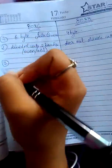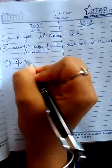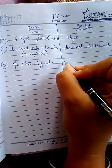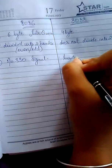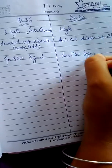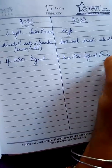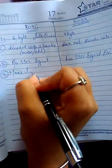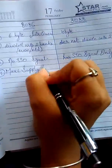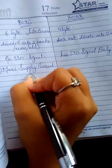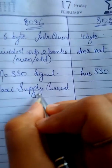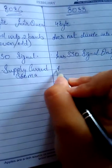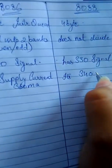The 8086 has no SSO signal, while the 8088 has the SSO signal. Additionally, the maximum current supply to the 8086 is 360 mA, while in the 8088 it is 340 mA.